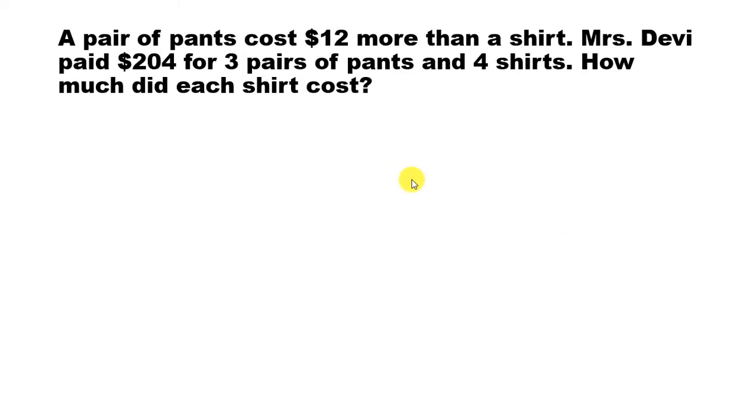Hi everyone, welcome back to Singapore math. A pair of pants cost $12 more than a shirt. Mrs. Devi paid $204 for three pairs of pants and four shirts. How much did each shirt cost? So let's go ahead with the first statement here.